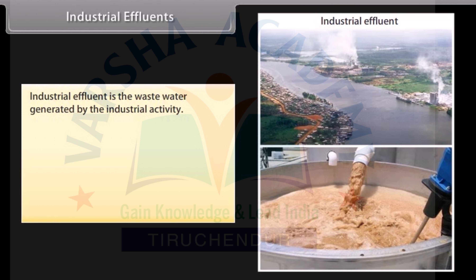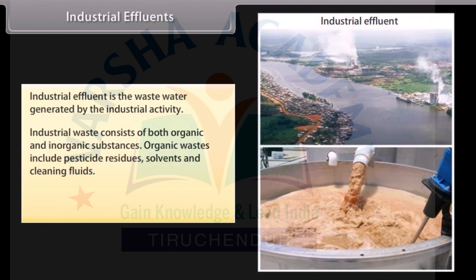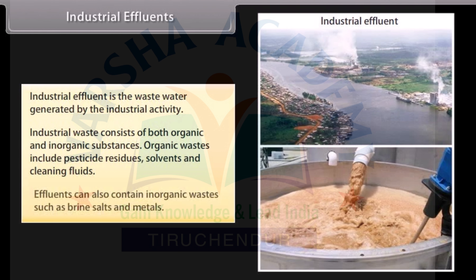Industrial effluent is the wastewater generated by industrial activity. Industrial waste consists of both organic and inorganic substances. Organic wastes include pesticide residues, solvents and cleaning fluids. Effluents can also contain inorganic wastes such as brine salts and metals.